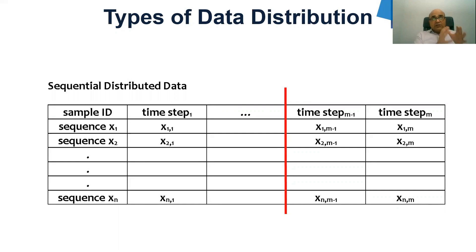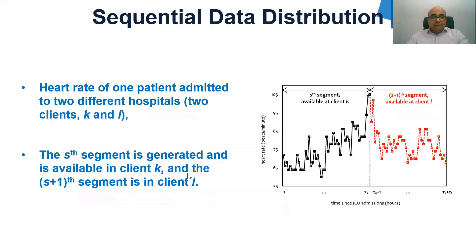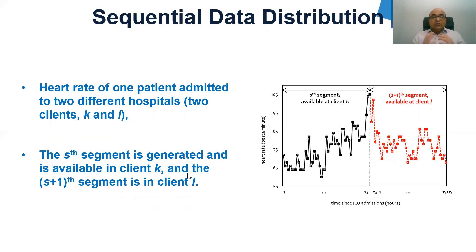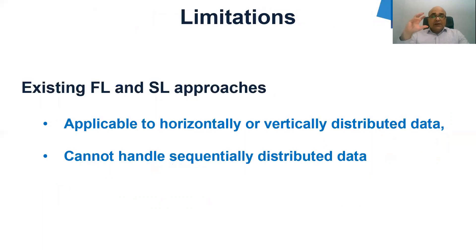Consecutive segments of training sequences are distributed across different clients and are available on different clients. To give you an example, suppose one patient is consecutively admitted to two different hospitals, each recording sequential vital signs of the patient — for example, heart rate. The heart rate of the patient is sequentially distributed across two hospitals, or in our case two clients. This multiple segment sequential data can be used to train machine learning models to predict, for example, mortality of a patient. The existing federated learning and split learning approaches work on horizontally or vertically partitioned data and cannot handle sequentially partitioned data.